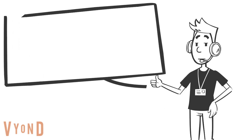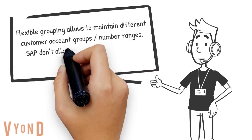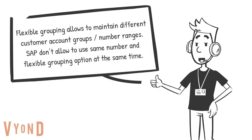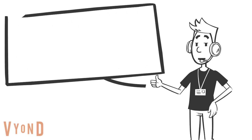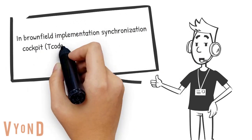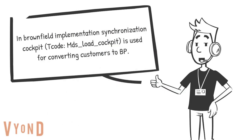Flexible grouping allows maintaining different customer account group number ranges. SAP does not allow using the same number and flexible grouping options at the same time. In brownfield implementation, the synchronization cockpit transaction code MDS_LOAD_COCKPIT is used for converting customers to BP.